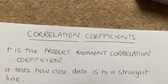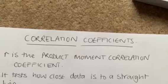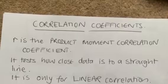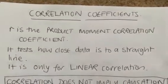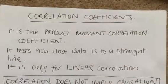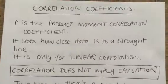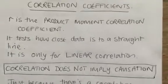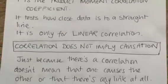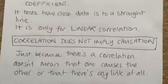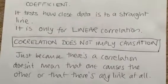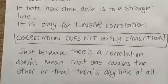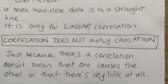The correlation coefficient r is the product moment correlation coefficient — that's the letter we use for it. What this does is test how close data is to a straight line, so we are talking only about linear correlation. An important statement we use quite a lot: correlation does not imply causation. Just because there's a correlation, it does not necessarily mean that one causes the other.